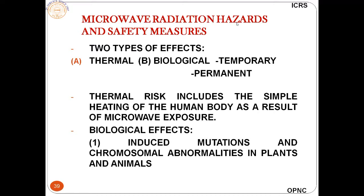Microwaves can also be a hazard and could have thermal, biological, temporary, or permanent effects. Thermal risk includes simple heating of the human body as a result of microwave exposure. Continuous exposure of more than half an hour is likely to cause harm, while intermittent exposure has little effect. Biological effects include induced mutations and chromosomal abnormalities in plants and animals. We must ensure people and animals are not exposed continuously.